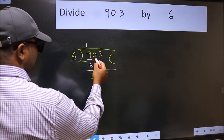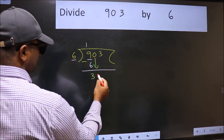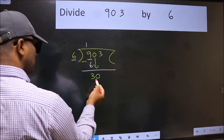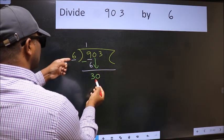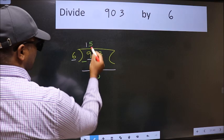After this, bring down the beside number. So 0 down. So 30. When do we get 30 in 6 table? 6×5 is 30.